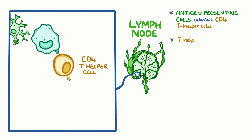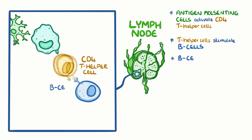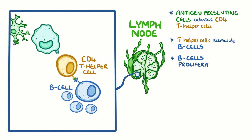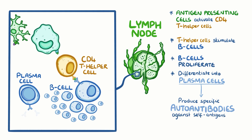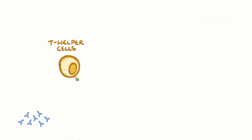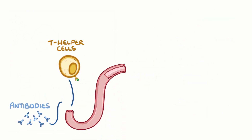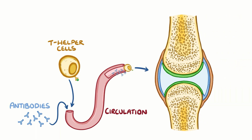The antigens get picked up by antigen-presenting cells and are carried to the lymph nodes to activate CD4 T helper cells. T helper cells stimulate nearby B cells to start proliferating and differentiate into plasma cells, which produce specific autoantibodies against these self-antigens. In rheumatoid arthritis, T helper cells and antibodies enter the circulation and reach the joints.